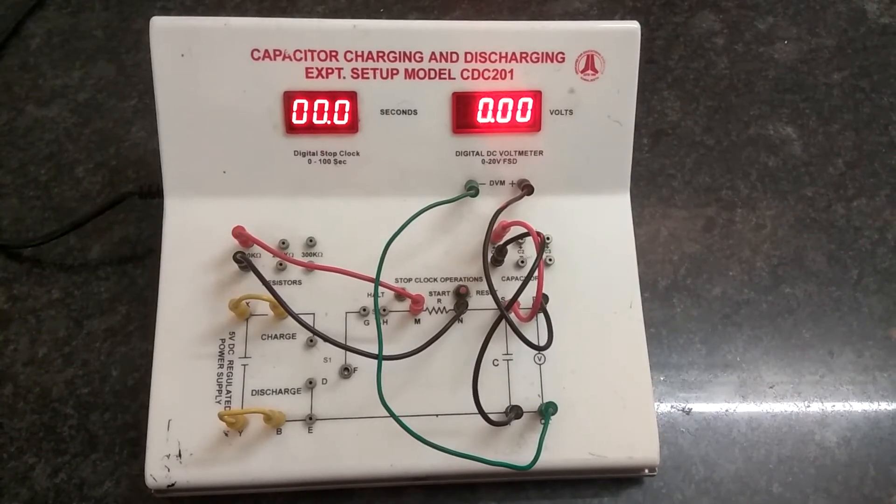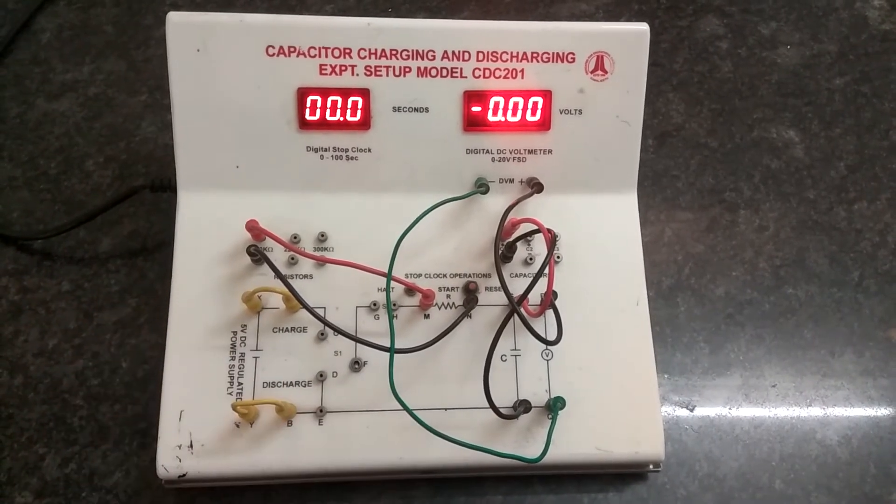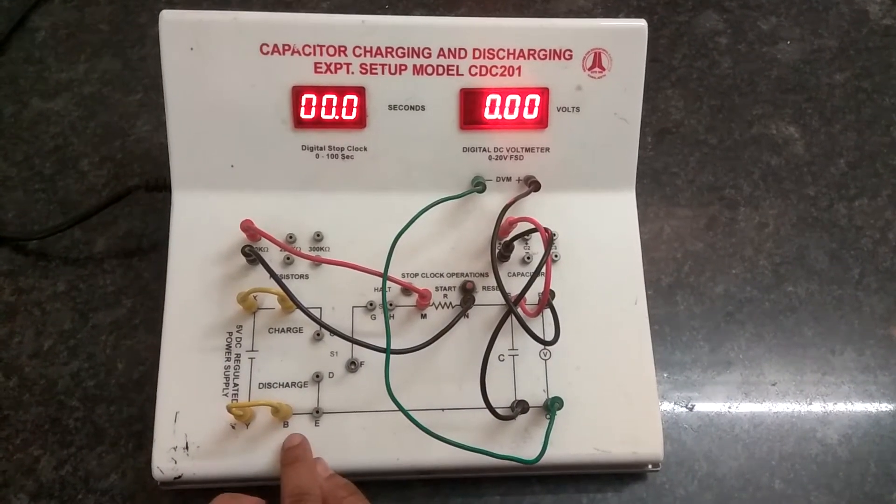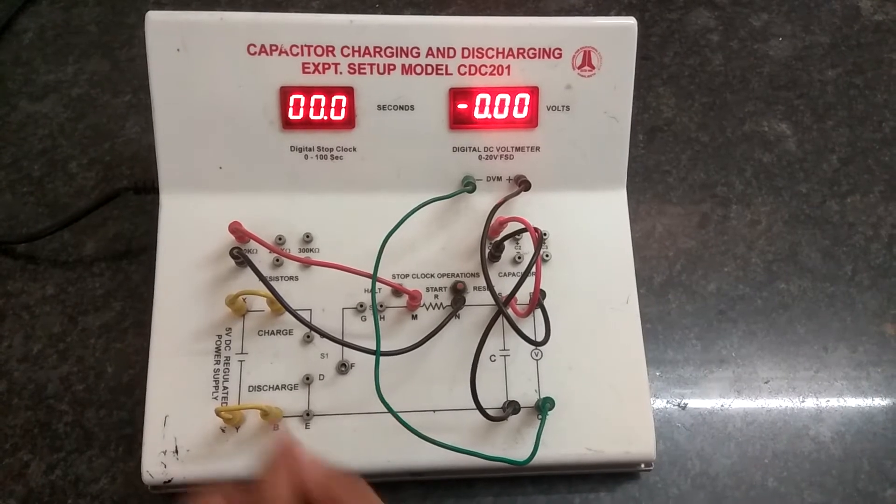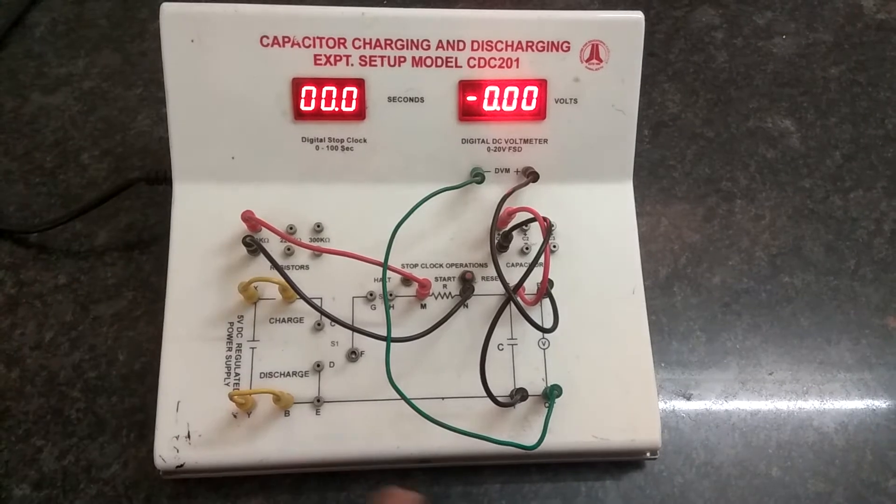Here we have A and X has been connected and Y to B and we here using the resistance value as 100 kilo ohms.